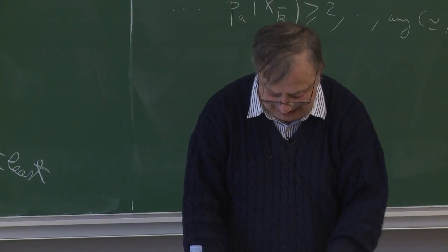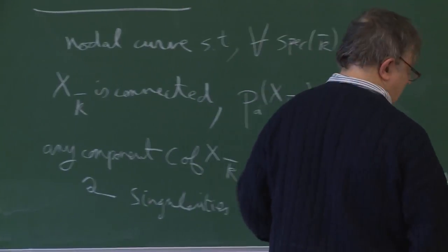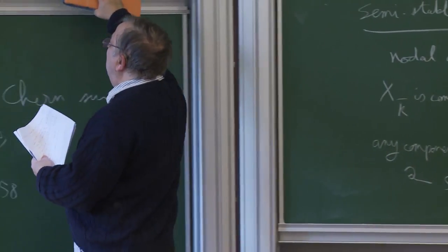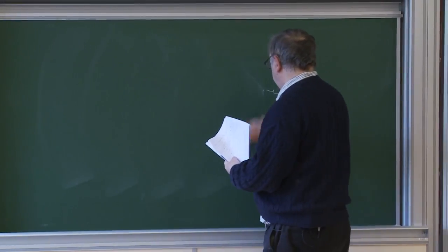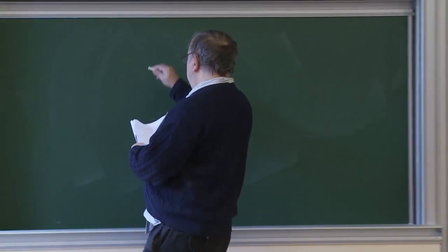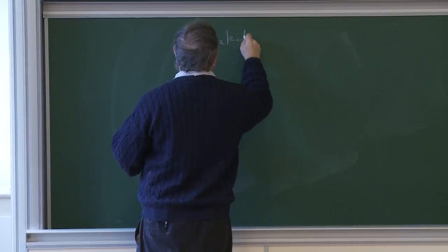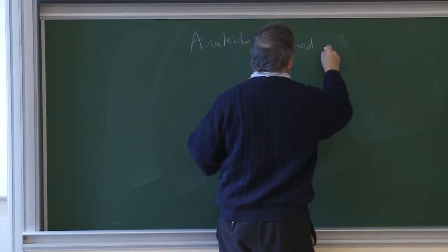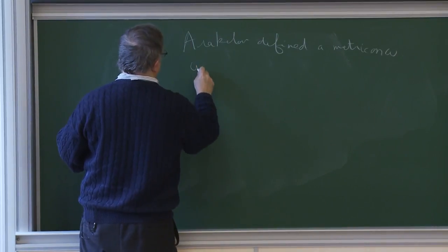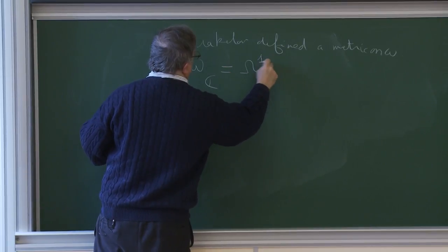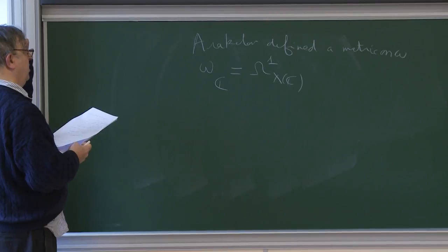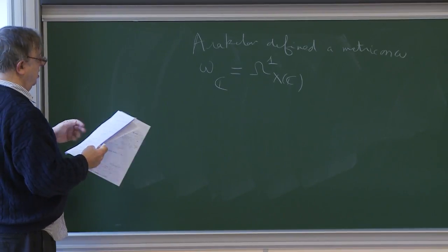This is a line bundle of interest on X. Arakelov has defined a metric on omega. Omega on the complex points is of course just the sheaf of differentials of the Riemann surface, and Arakelov has defined a metric on this line bundle. I will explain the metric.